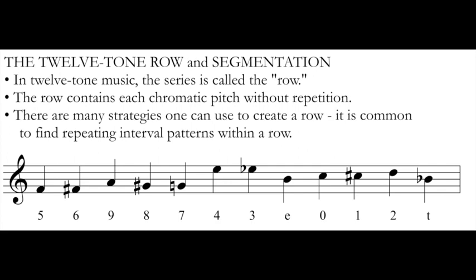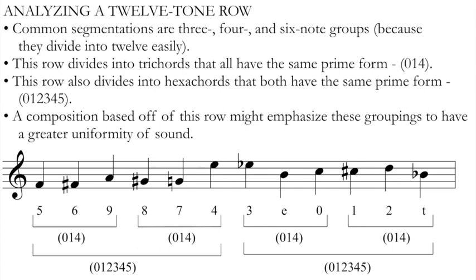So let's dig a little bit deeper into this particular 12-tone row. One common tactic when creating a 12-tone row is to repeat particular segments in different transpositions throughout the row. Not every row works this way, but this is a good starting point when analyzing a 12-tone row. Common segmentations are 3-, 4-, and 6-note groups, because those divide into the 12 notes easily — so we can have four 3-note groups, three 4-note groups, or two 6-note groups. If we take a closer look at the row I created here, we can see that it segments in a couple of interesting ways. This row divides into trichords — 3-note groups — that all have the same prime form.